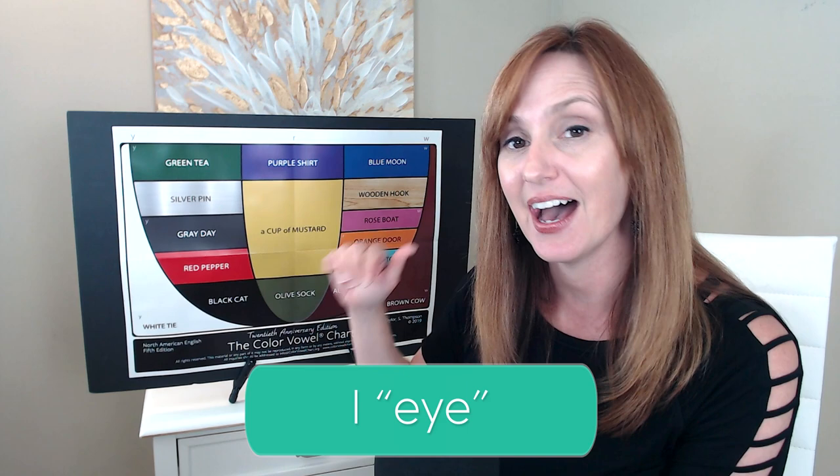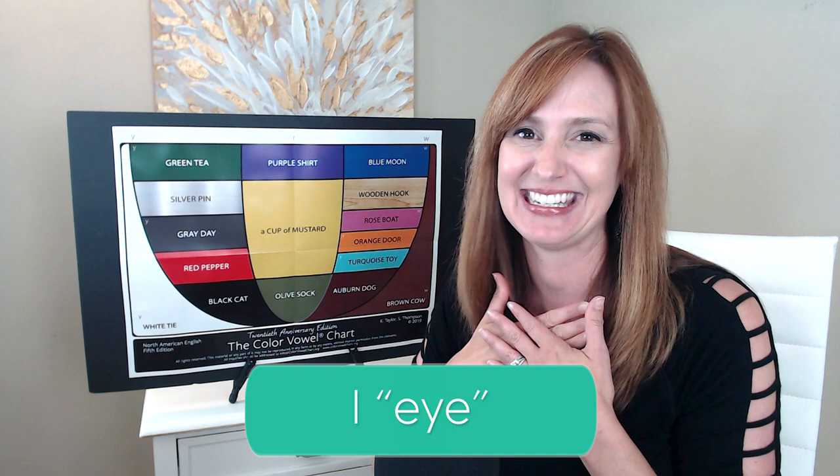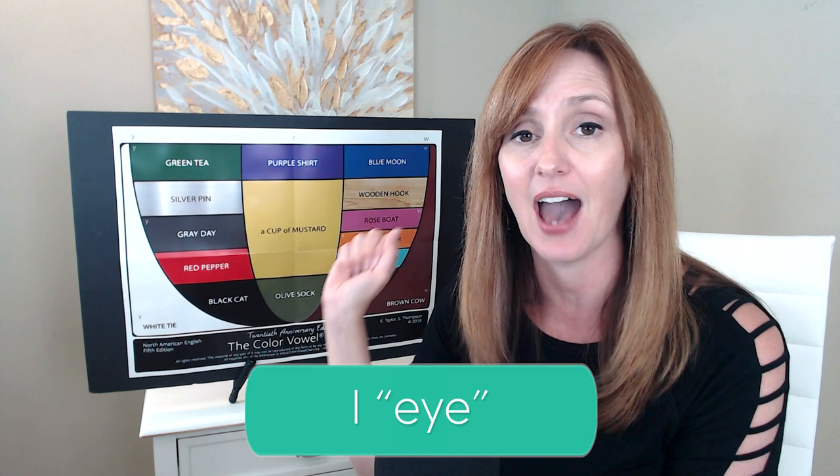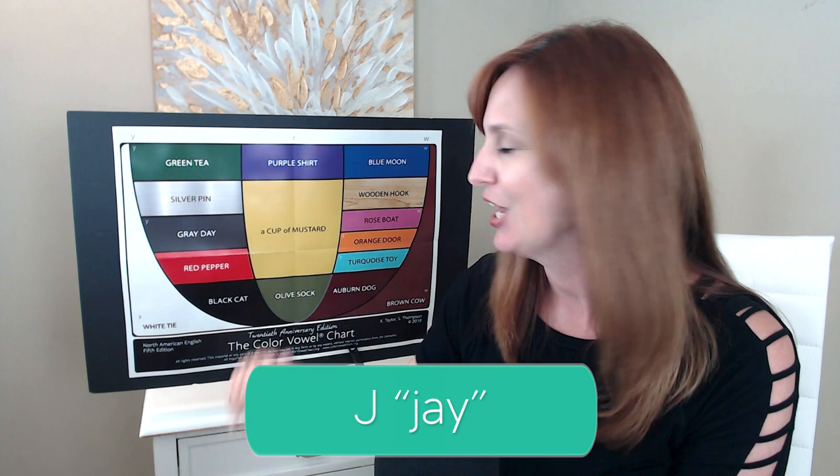I. White tie I — just like the pronoun I as in me. This is a moving vowel sound. You want to make sure you get that full mouth movement to fully pronounce the I letter name. I.